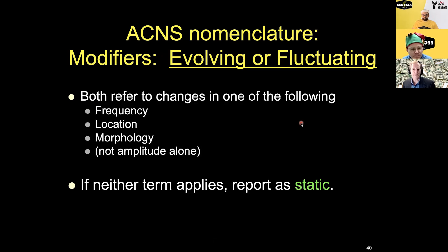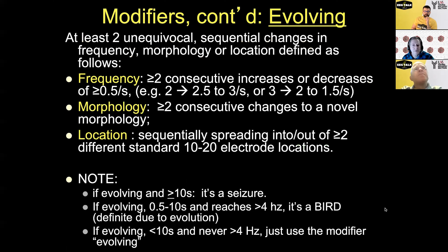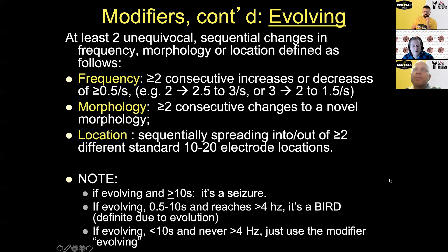The other options are fluctuating, or if it's neither evolving nor fluctuating, we call it static. Evolution or fluctuation refers to frequency, location, or morphology — any one of those qualifies, but amplitude alone does not. For evolving — a key feature of seizures — you need at least two unequivocal sequential changes in frequency, morphology, or location. For frequency, it has to change by 0.5 Hz each time, so going from 2 to 2.5 to 3 Hz is enough.